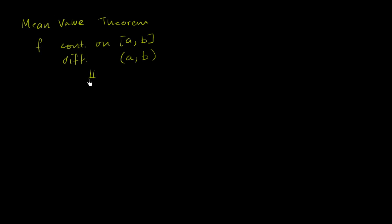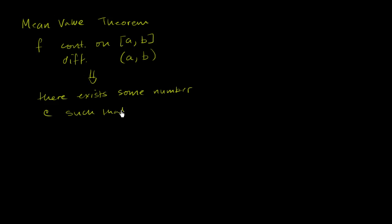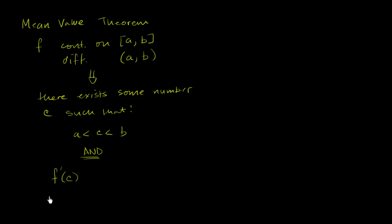then we know that there exists some number c such that a is less than c is less than b — so c is in this interval — and the derivative of our function at that point, which you could view as the slope of the tangent line at that point, is equal to